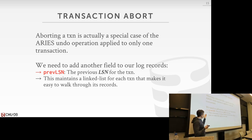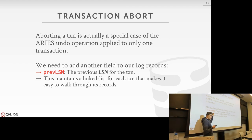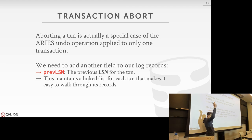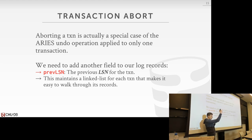We're going to add an additional field to our log records called the prevLSN. This is not required, but it's going to make your life easier at runtime, because now you can know how to jump back to find the next thing you need to reverse for a given transaction — to avoid scanning everything. You essentially think of this as: for every transaction you're generating a linked list, so for every aborted transaction here's all the changes I need to reverse, and I know how to walk back one by one and reverse them.